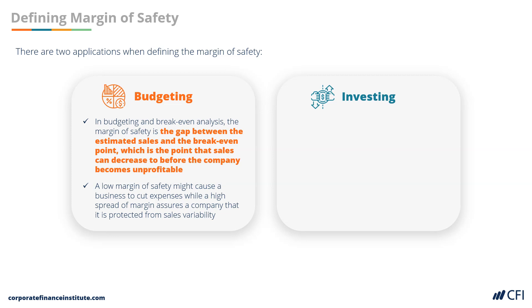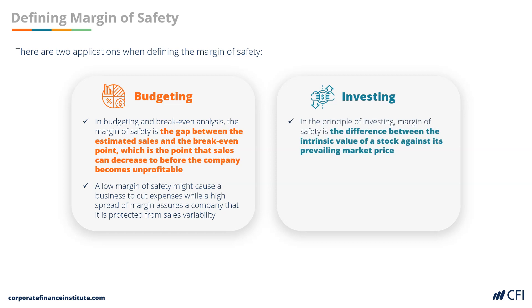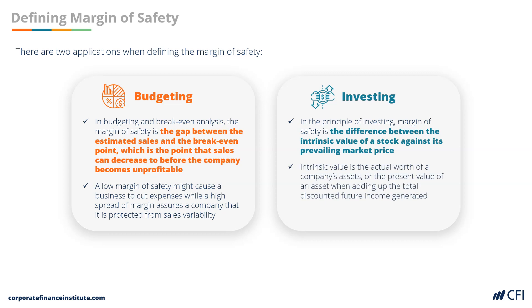Meanwhile, in investing, margin of safety is the difference between the intrinsic value of a stock against its market price. Intrinsic value is the worth of a company's assets or the present value of an asset when adding up the total discounted future generated income. Keep in mind that determining the intrinsic value of a security is highly subjective because each investor has a different approach to valuation.